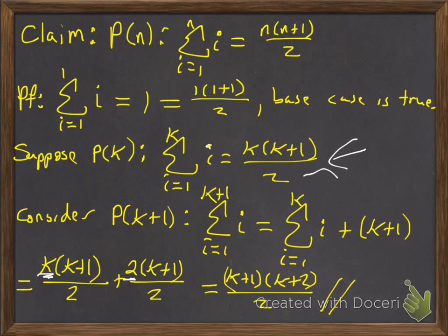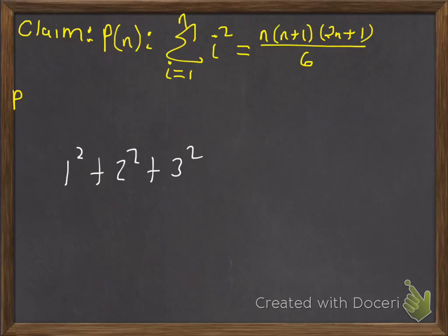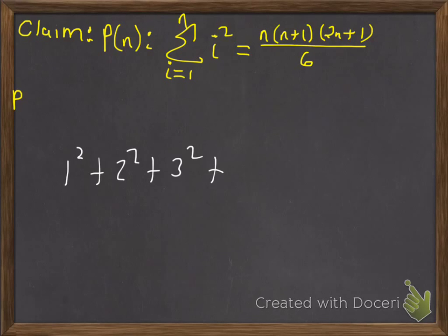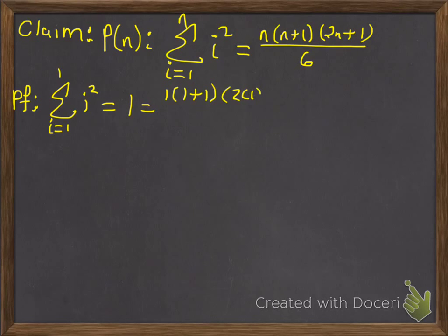The next one is adding up the squares. The claim is that if I add up all the squares — 1 squared plus 2 squared plus 3 squared plus ... plus n squared — it's going to equal n(n+1)(2n+1) over 6. First we've got to show it's true for just 1. Well, 1 squared is 1. Does that fit the formula? We have 1 times 2 times 3, which is 6, over 6 — so that's 1. The base case is true.